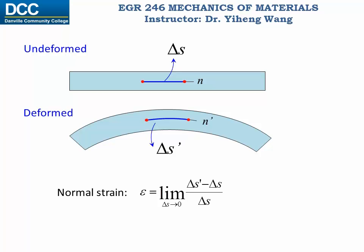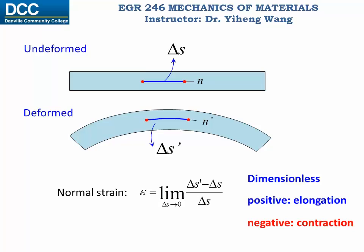Since the numerator and the denominator both have units of length, the normal strain is dimensionless, or it can have the unit of length over length, which is essentially still dimensionless. Since epsilon indicates the change in size, a positive normal strain indicates elongation, and a negative normal strain indicates contraction.